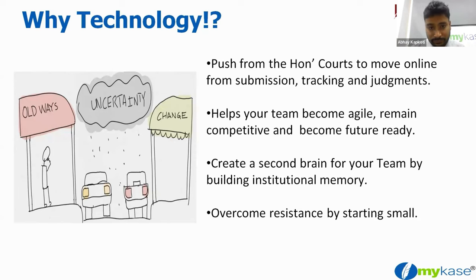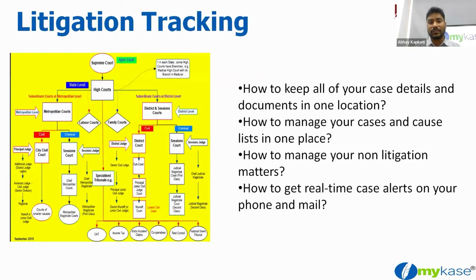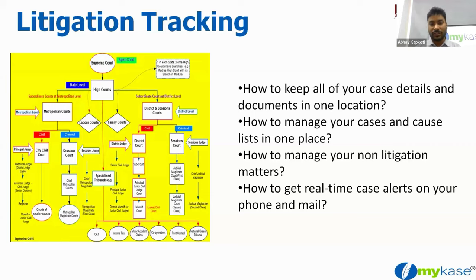Let's begin with the presentation part where I'll show you things — seeing is believing. One of the low hanging fruits for you would be litigation tracking. It's very simple. In today's day and age, 10,000 courts are online — updating cause lists, sending orders — everything done on their website. But these 10,000 courts might be across different consumer forums, high courts, district courts — each with a different website. NCLT, NGT, CAT — all have different websites. How do you monitor all these from one place?